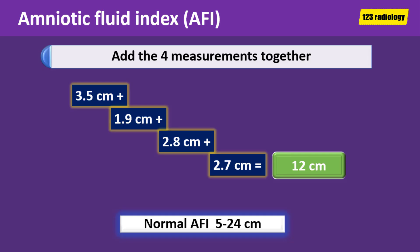As you can see in this case, the amniotic fluid index is about 12 centimeters, which is within normal values. A normal amniotic fluid index measures between 5 to 24 centimeters.